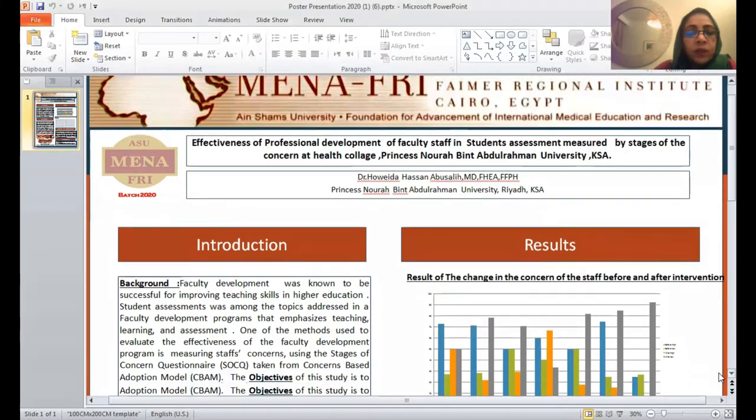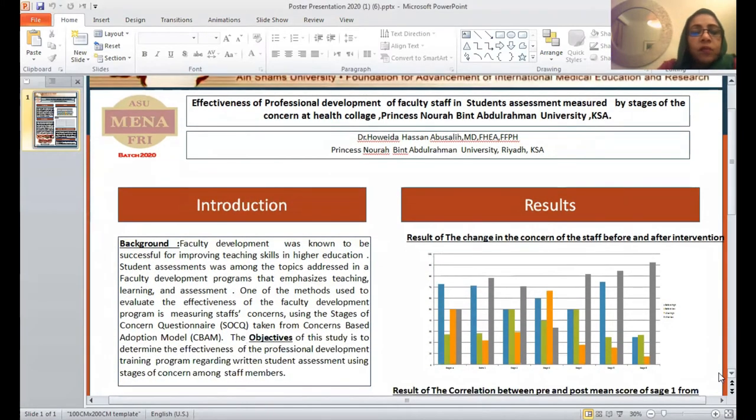Faculty development was known to be successful for improving teaching skills in higher education. Student assessment was among the topics addressed in faculty development programs that emphasized teaching, learning, and assessment. One of the methods used to evaluate the effectiveness of faculty development programs is measuring staff concern using stages of the concern questionnaire taken from the concern-based adoption model. The objective of this project is to determine the effectiveness of professional development training programs regarding written student assessment using stages of the concern questionnaire.